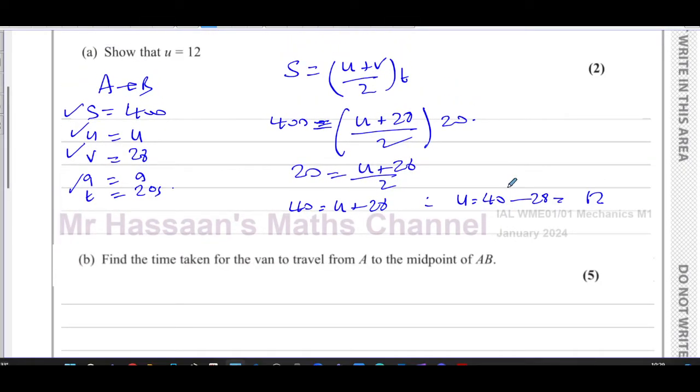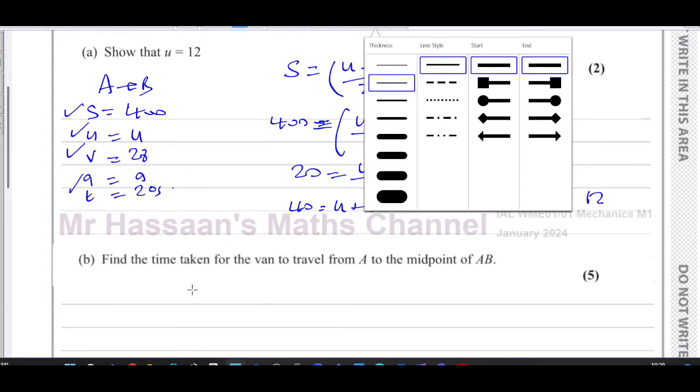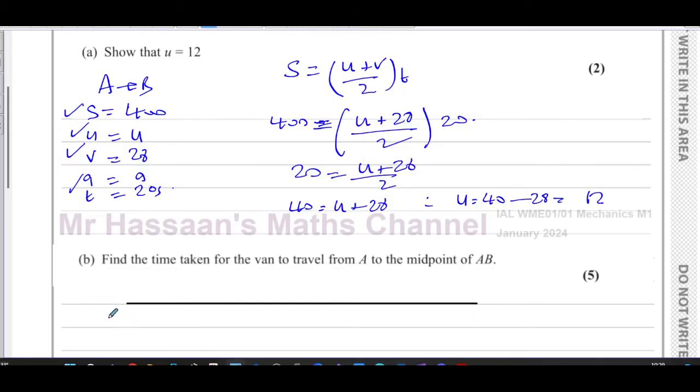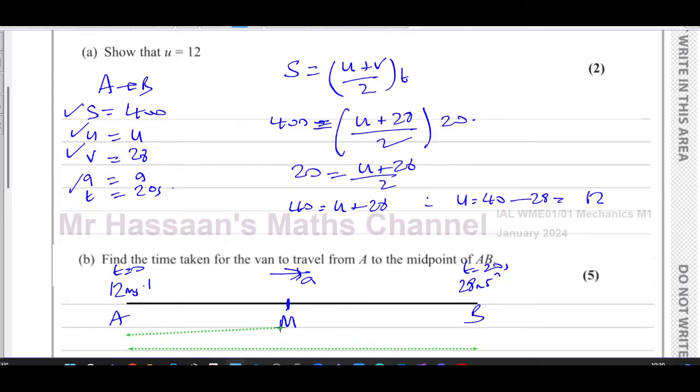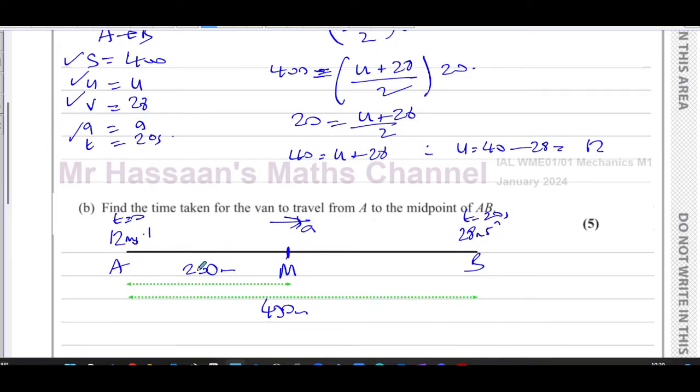Then it says, find the time taken for the van to travel from A to the midpoint of AB. So now a diagram will be useful. Let's make a line to represent A to B. This is A, this is B, and this is the midpoint M. This thing is going with constant acceleration, so the acceleration is the same all the way through. We know that at A it's going at 12 meters per second, at B it's going at 28 meters per second. We know that this is time equals zero and this is time equals 20 seconds. We know that the distance is 400 all the way across, and the distance from A to M is half the distance. So we know that this is 200 meters and this is 400 meters total distance.